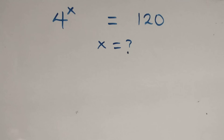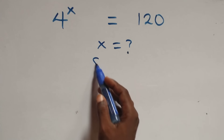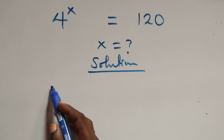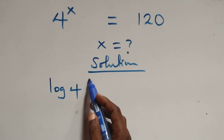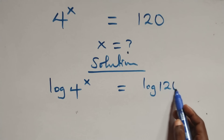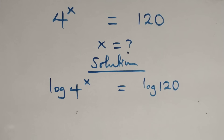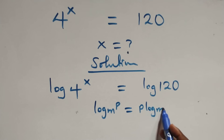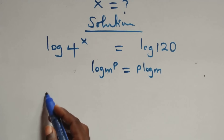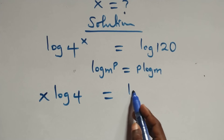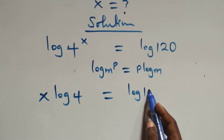Hello, you're welcome. How to solve this nice exponential equation. From here, we take the log on both sides: log 4 raised to power x equals log 120. Then we apply the power of logarithm, where log m raised to power p is the same as p log m. This becomes x log 4 equals log 120.